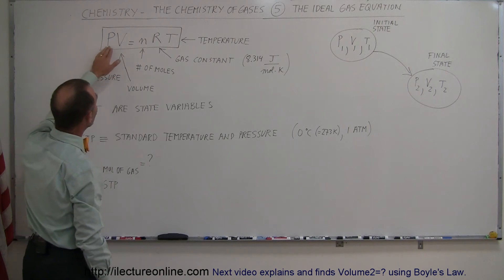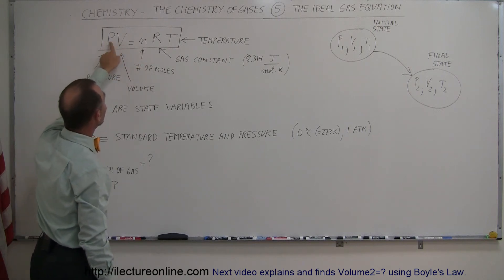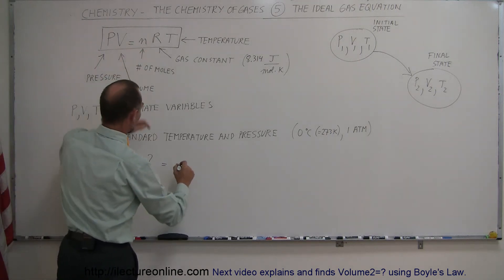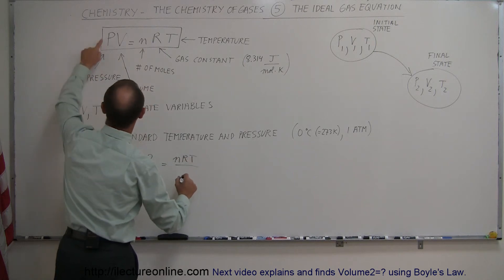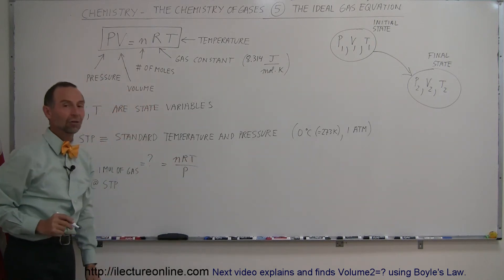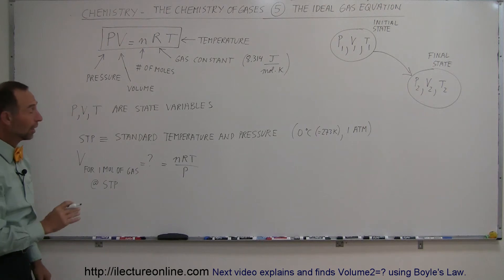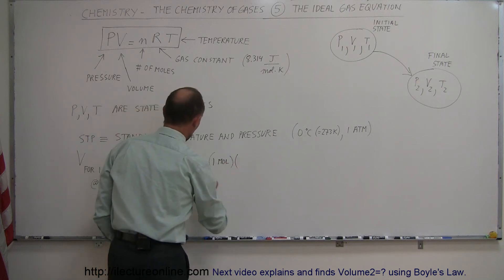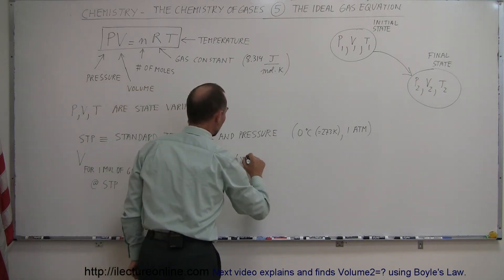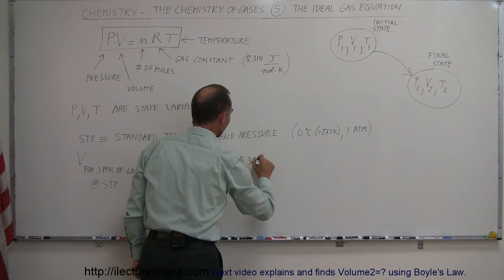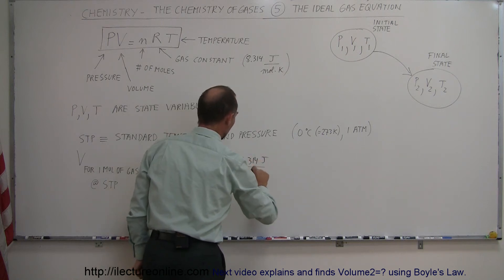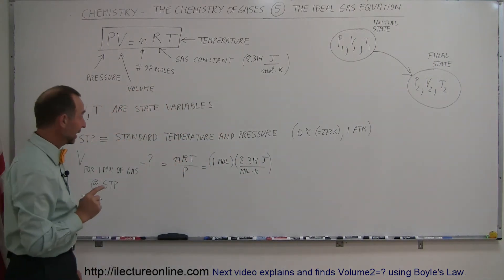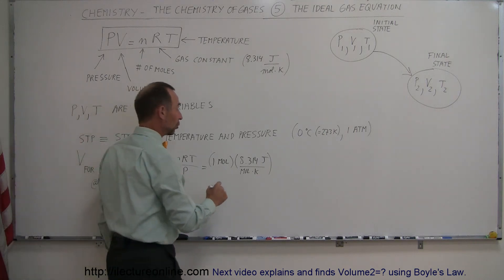solve for V by dividing both sides by P, so V equals nRT divided by P, which goes to the denominator. Now let's plug in what we know. n is going to be one mole by definition. R is 8.314 joules per mole per Kelvin. We multiply that times the temperature, and at STP conditions, temperature is 273 Kelvin.